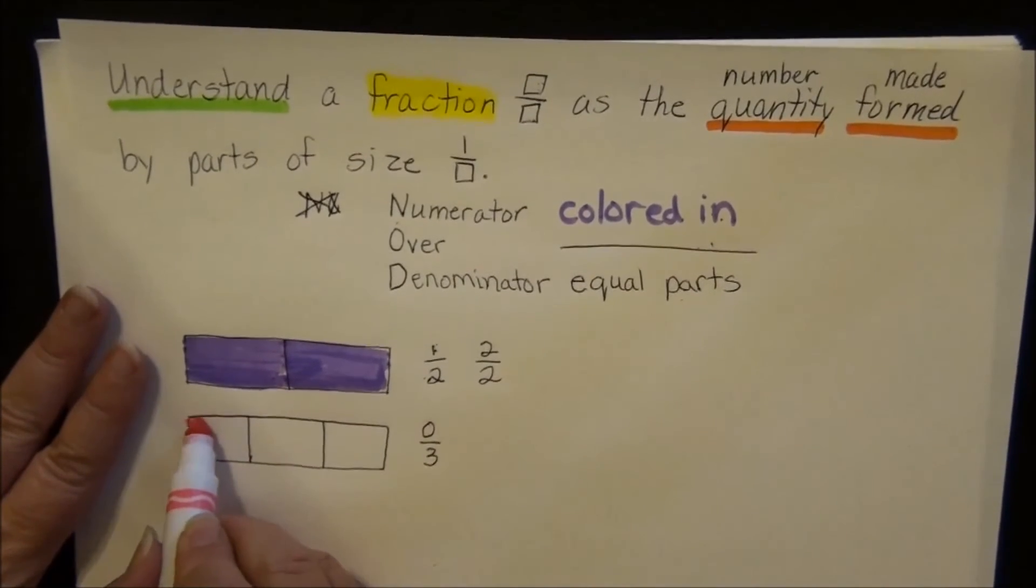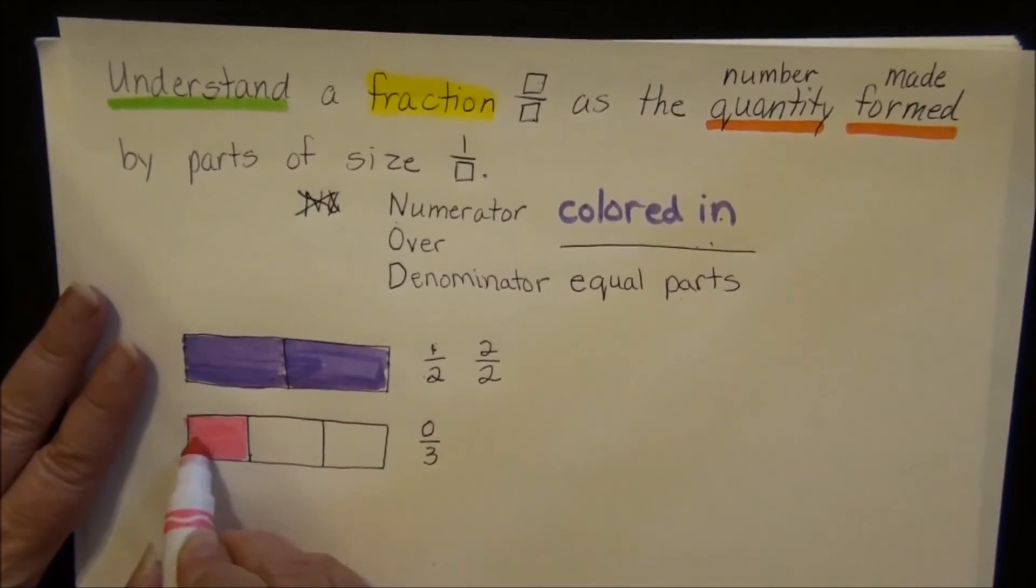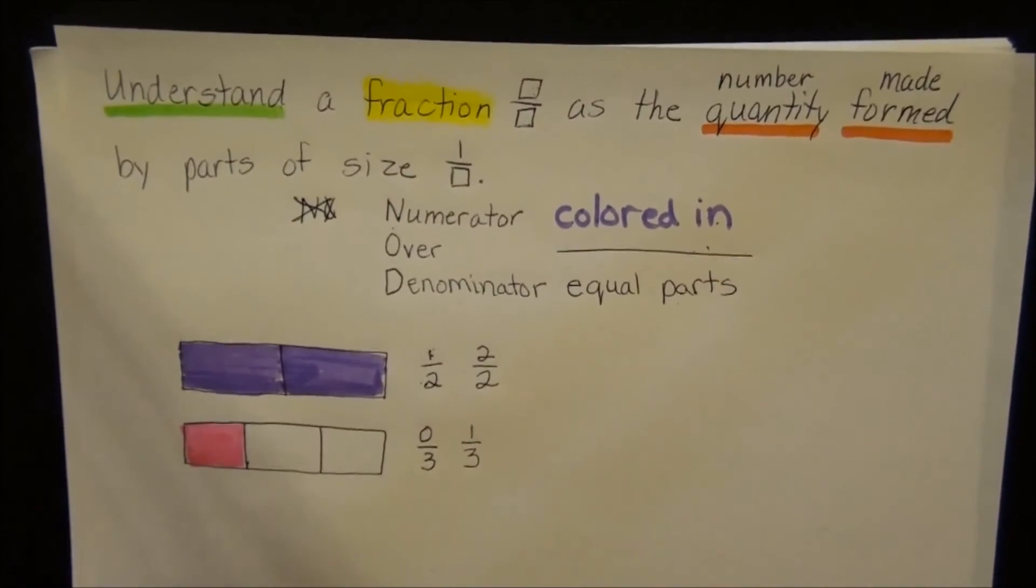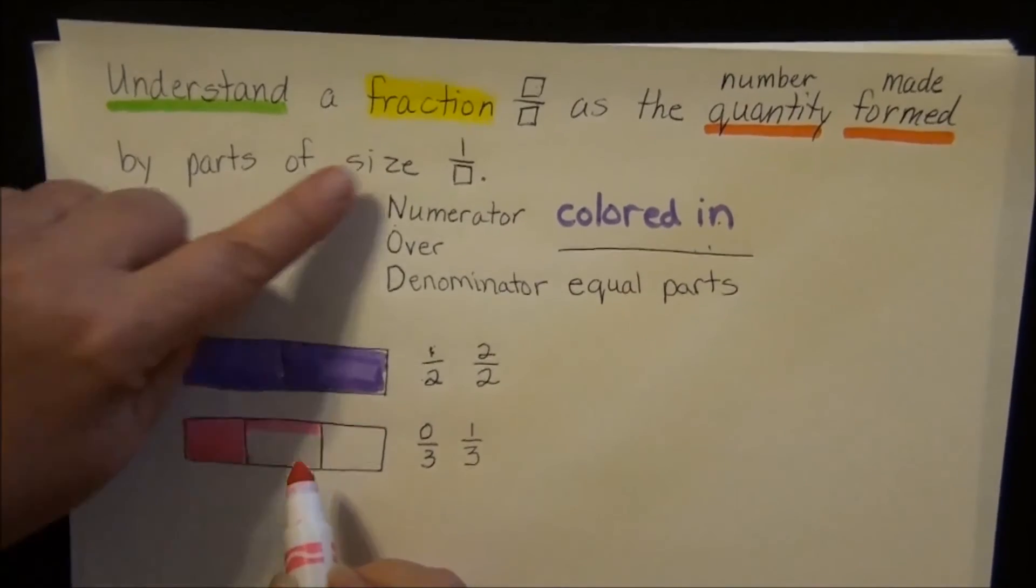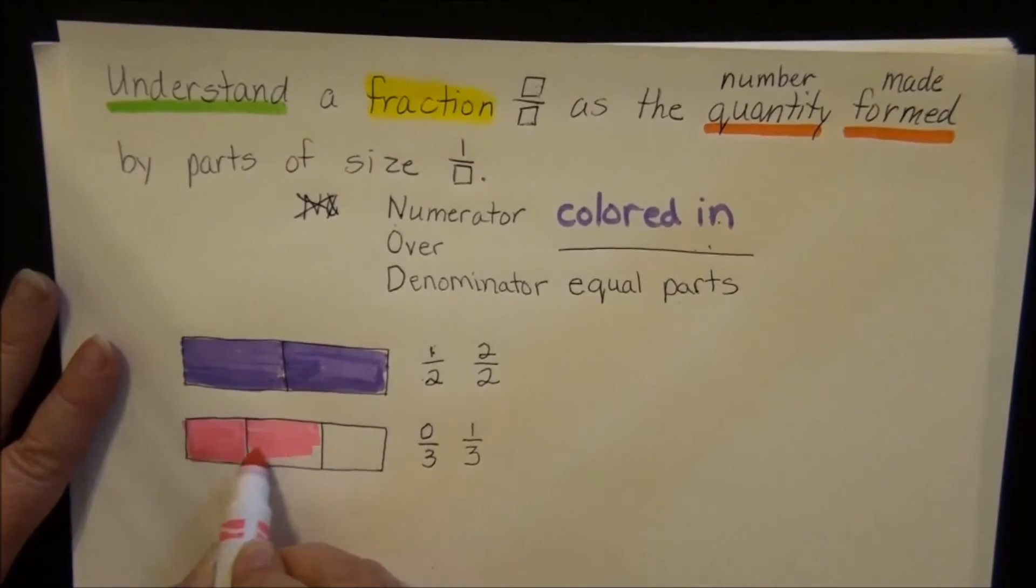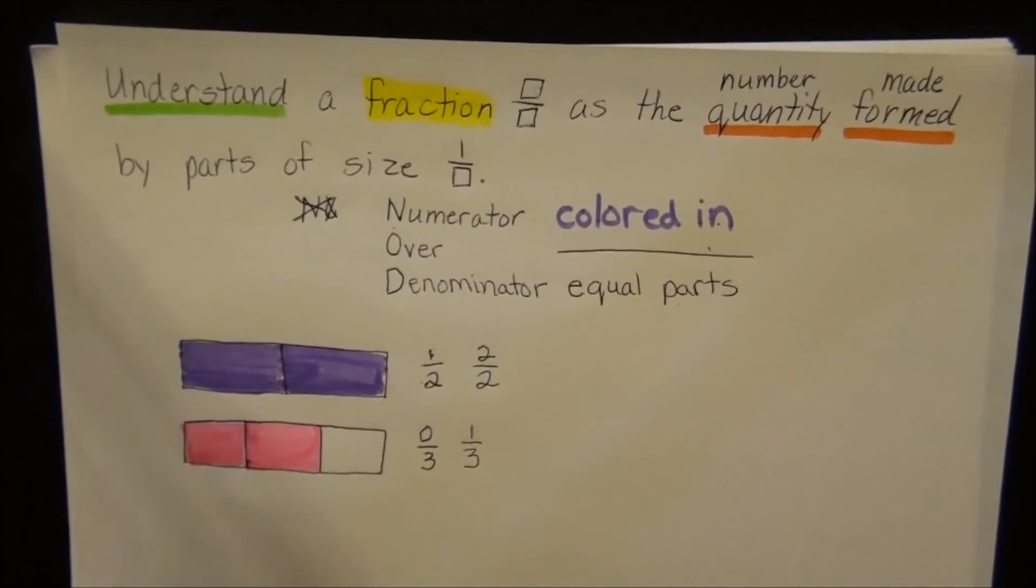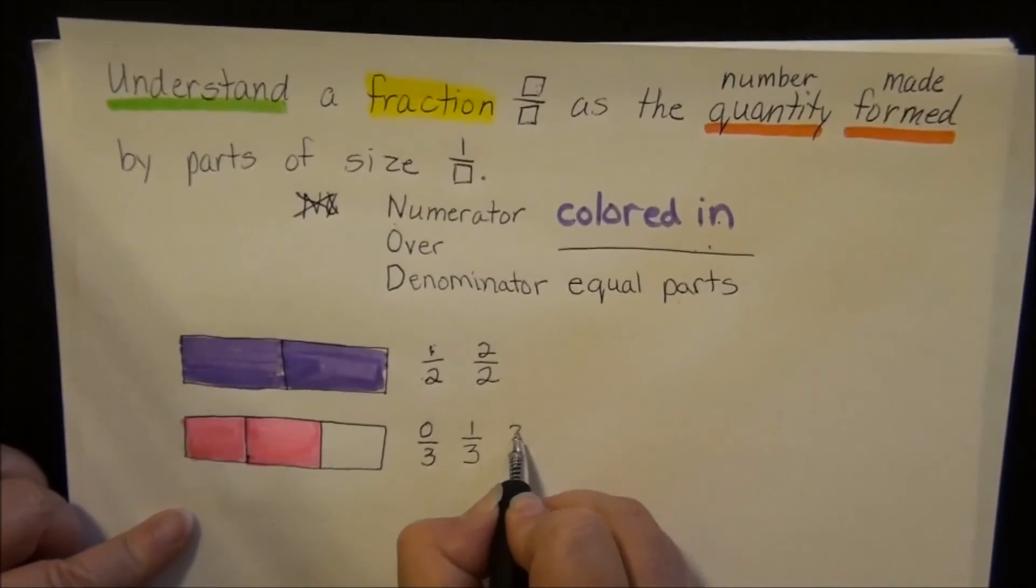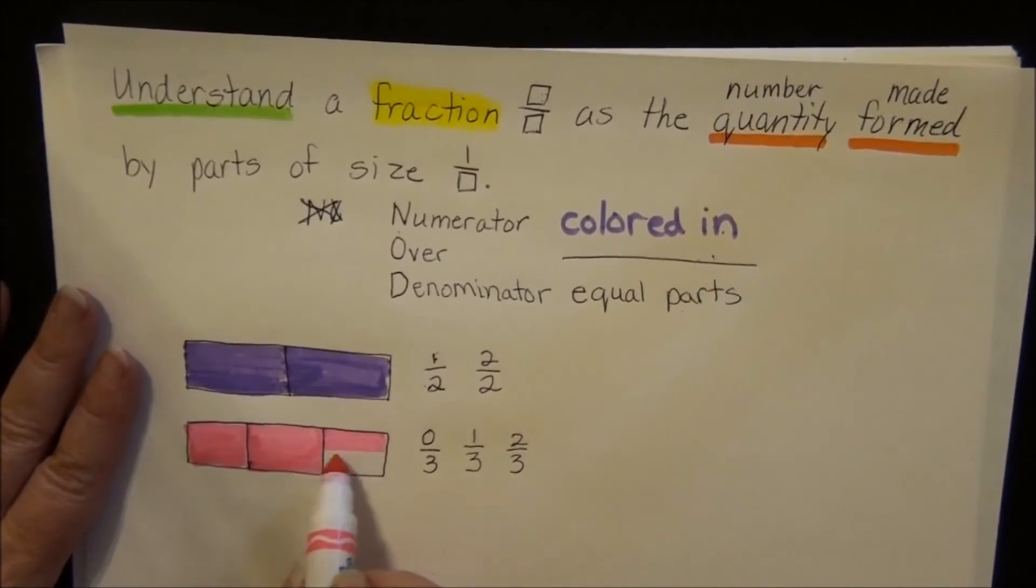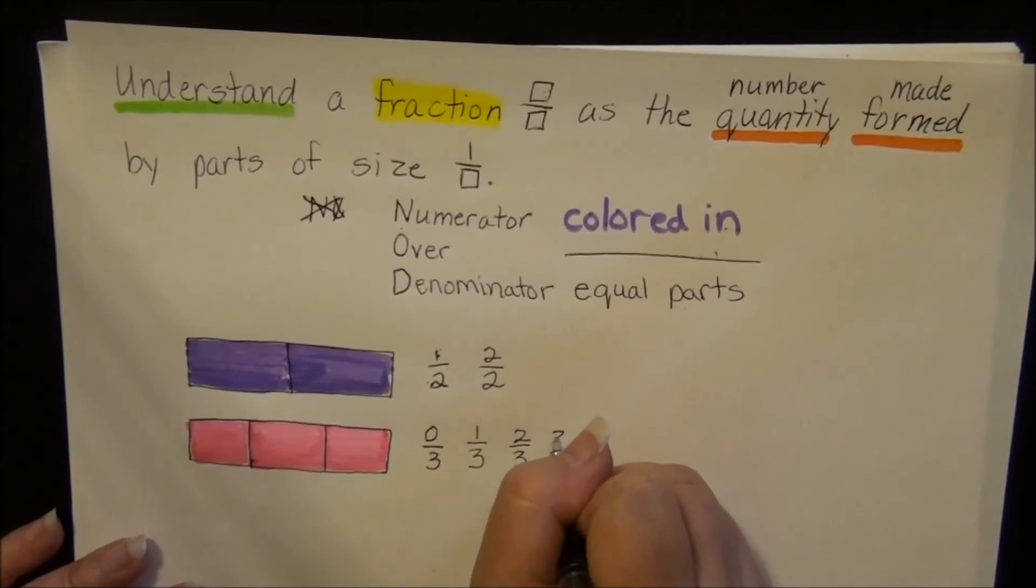Okay, now I'm going to color in one part. And so that fraction is one out of three. I'm going to color in one more part. Because remember, we're doing it parts of size one out of blank. So I'm going to color in a second part. And I just realized how much larger this part is than the first one. So now I have two colored in out of three. And now I have one more equal part. I have three out of three.